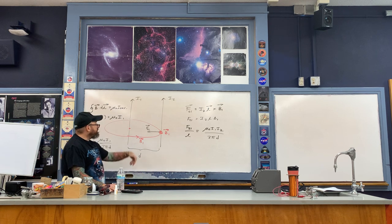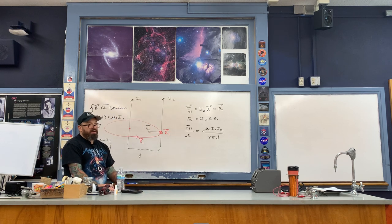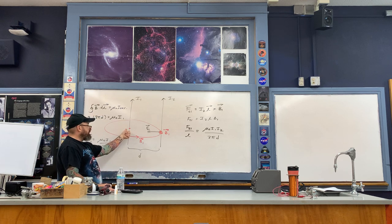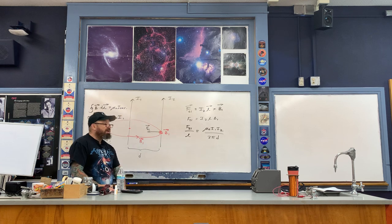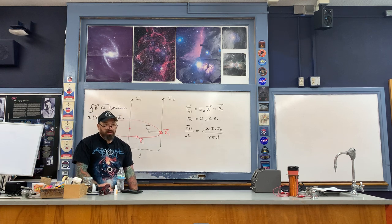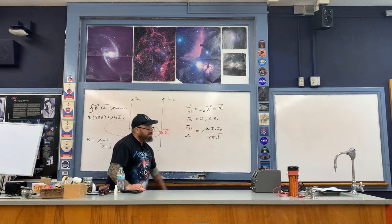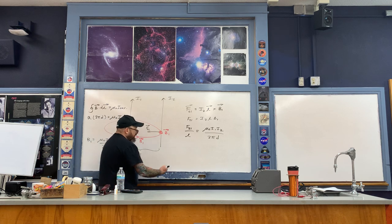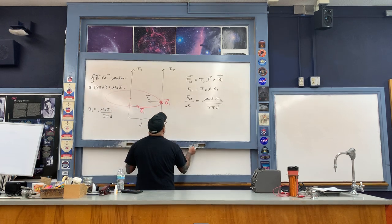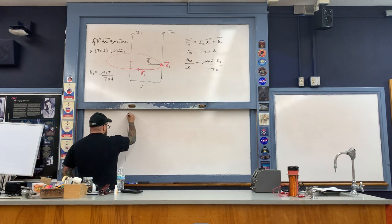Now we find the force on wire 1 due to wire 2. Wire 2 causes its own magnetic field that exerts a force on wire 1. By Newton's third law, this reaction force should have the same magnitude as the action force but point in the opposite direction.